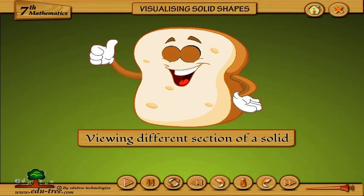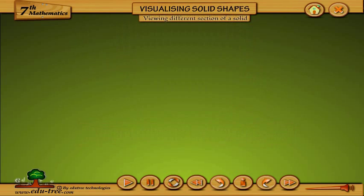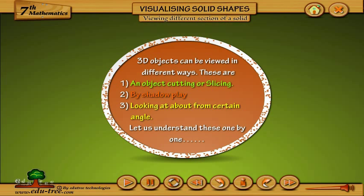Viewing different sections of a solid. 3D objects can be viewed in different ways. These are: first, by cutting or slicing an object; second, by shadow playing; third, by looking at an object from a certain angle. Let us understand these one by one.